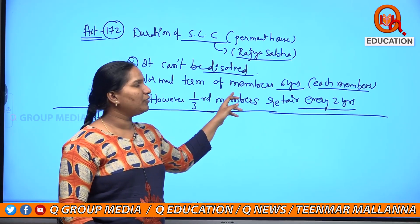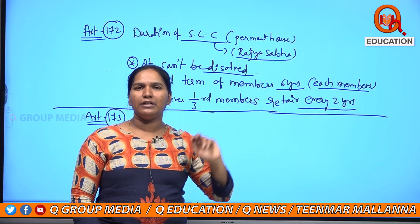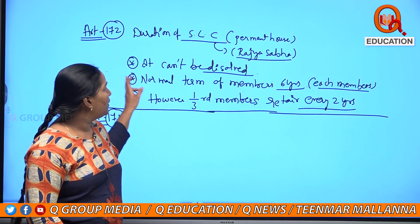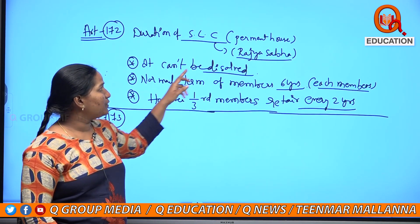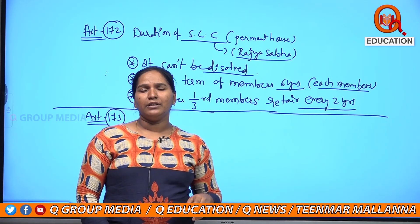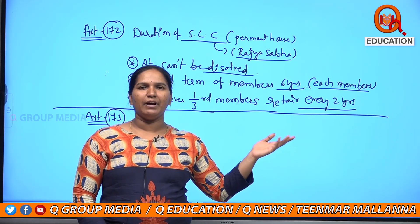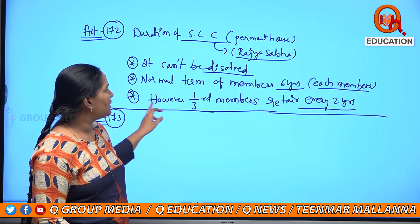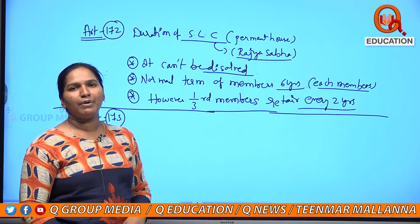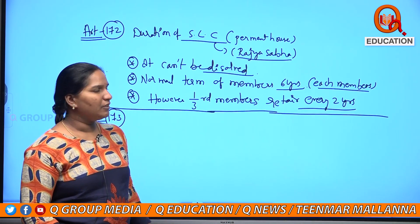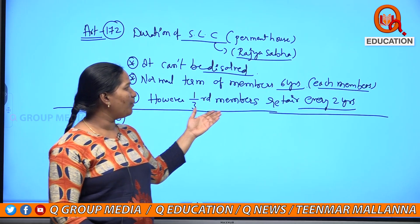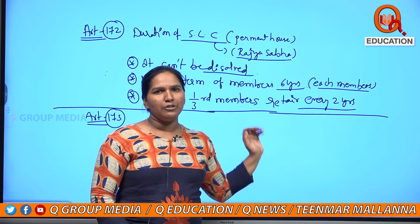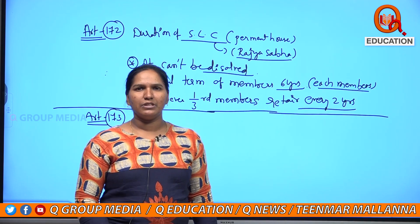Who has the authority to dissolve the Legislative Assembly? Can Rajya Sabha be dissolved? No, it cannot, because it is a permanent house. What is the term of each member of Rajya Sabha? Six years. How many members retire every two years? One-third members from the council.